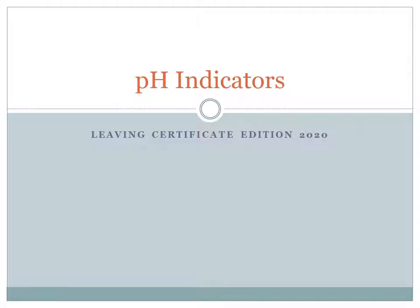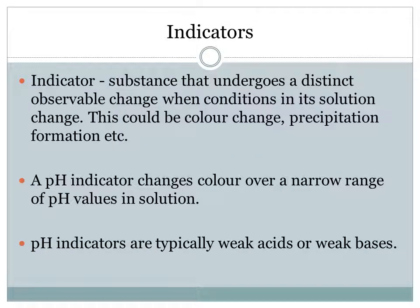Welcome back. Today we're going to look at pH indicators, and this is for the Leaving Certificate. So, what is an indicator? An indicator is a substance that undergoes a distinct observable change when conditions in its solution change. This could be a color change, a precipitate formation, or the release of a gas such as CO₂.